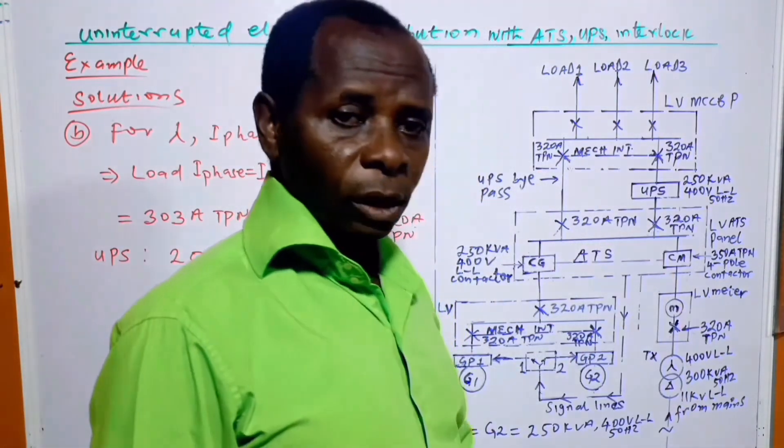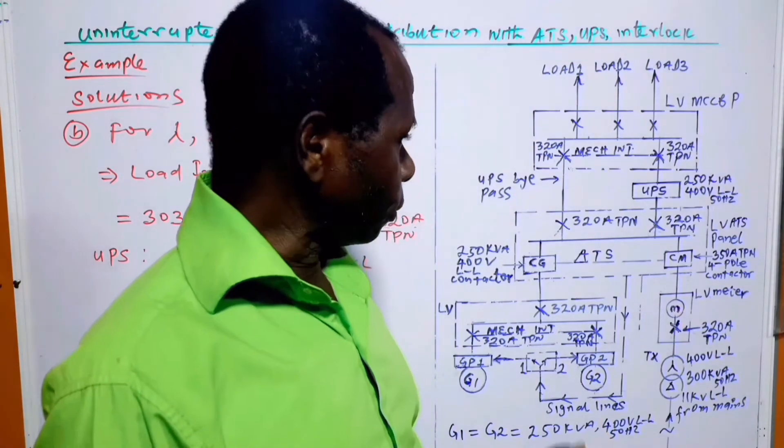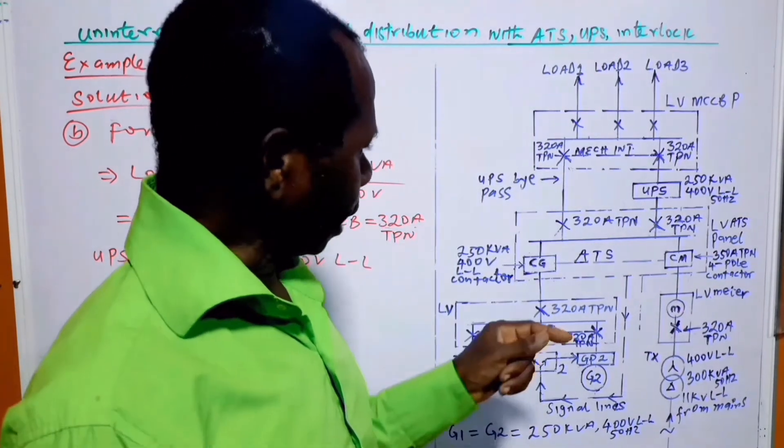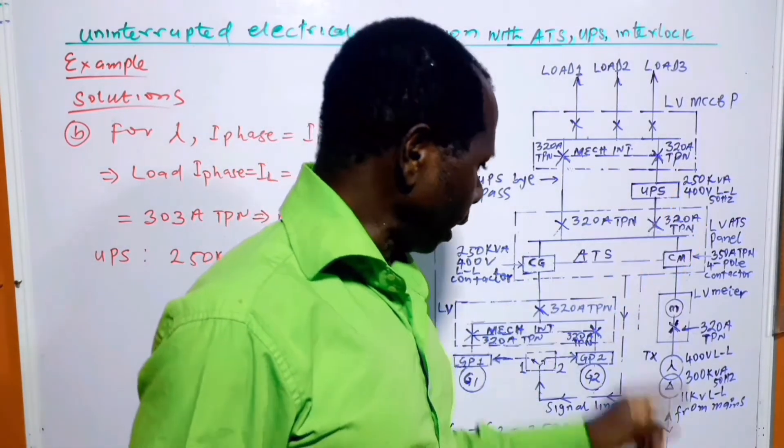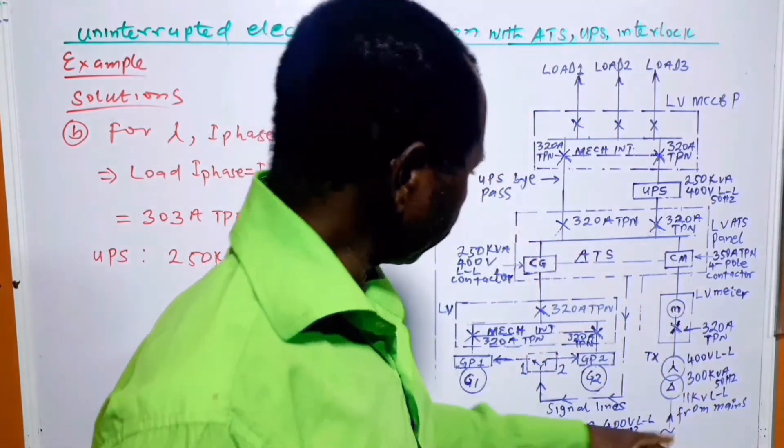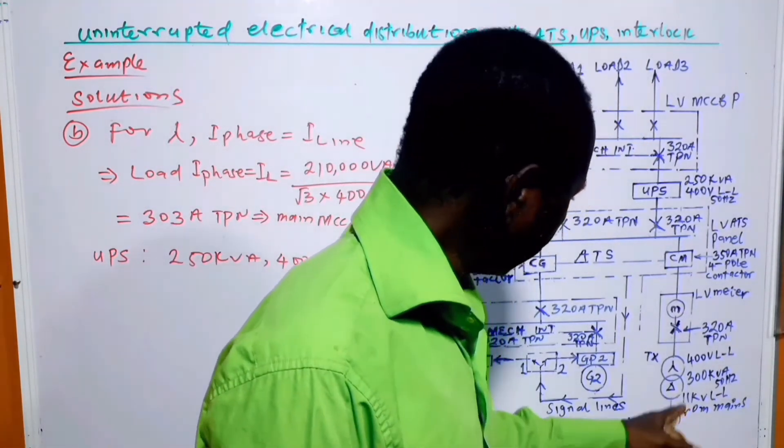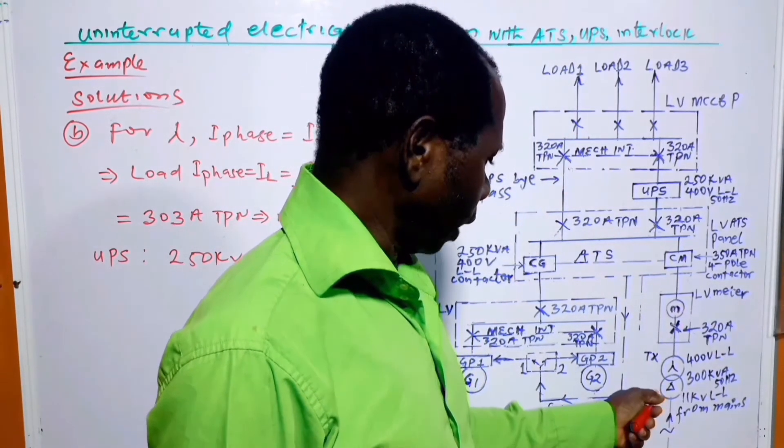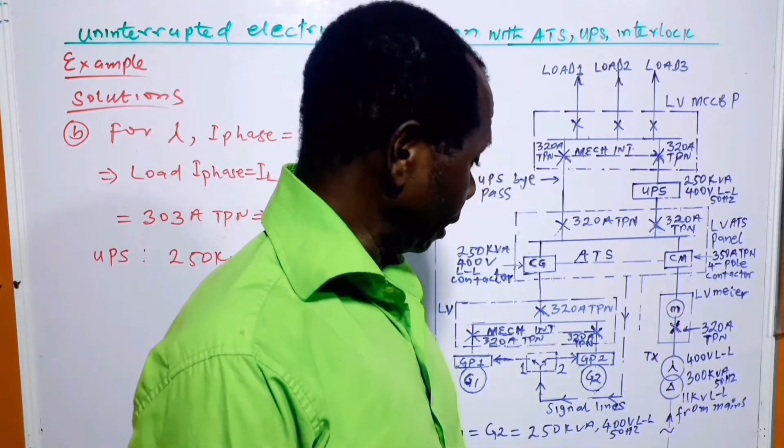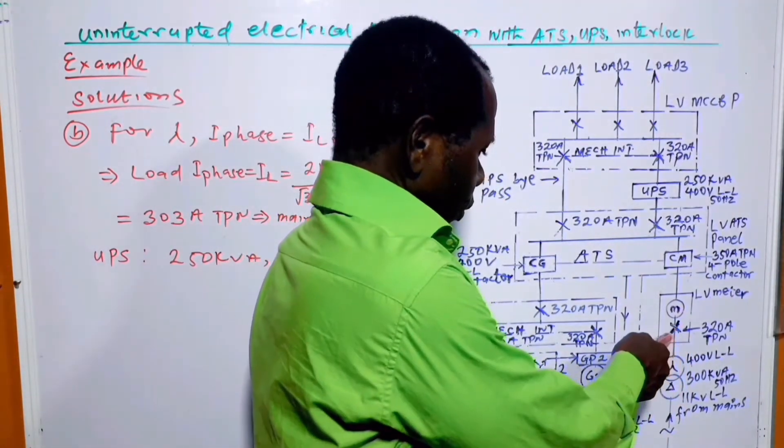Now, coming to the schematic diagram. So, let's say this part is the main side, the generator side and the load side. We start from the main side. Here we have the transformer, 11kV, the primary winding being connected in delta. Then we have the star here for the secondary winding. So from here we go to the energy meter.